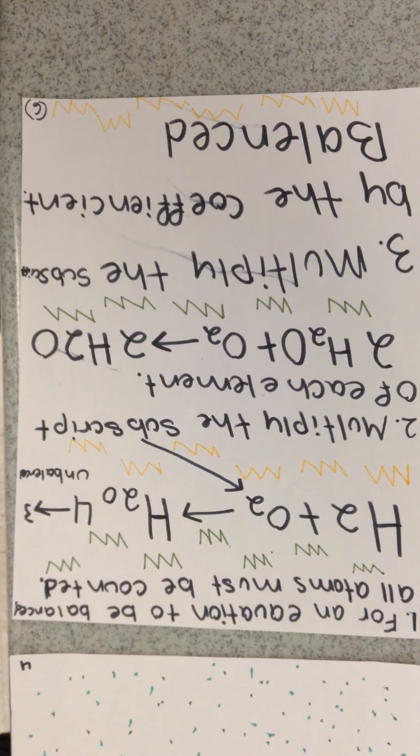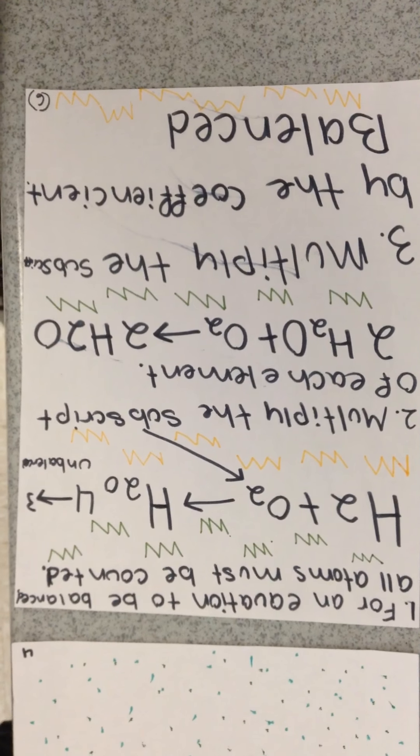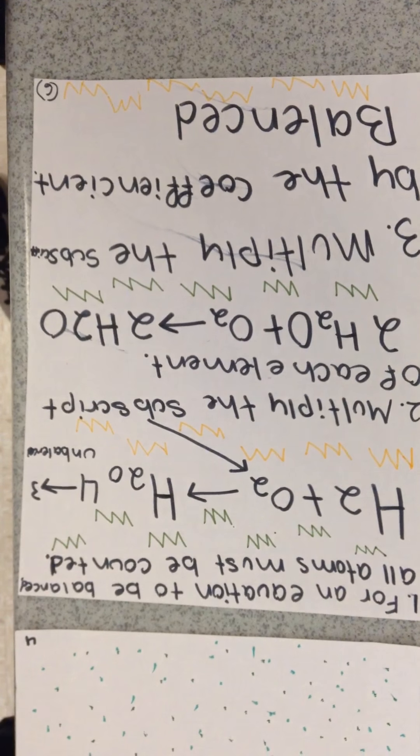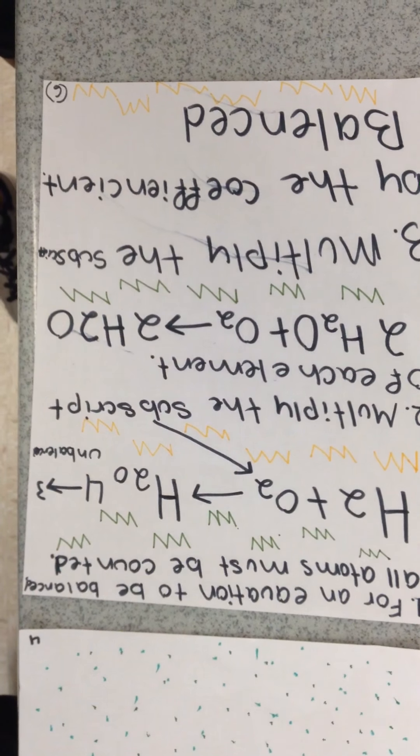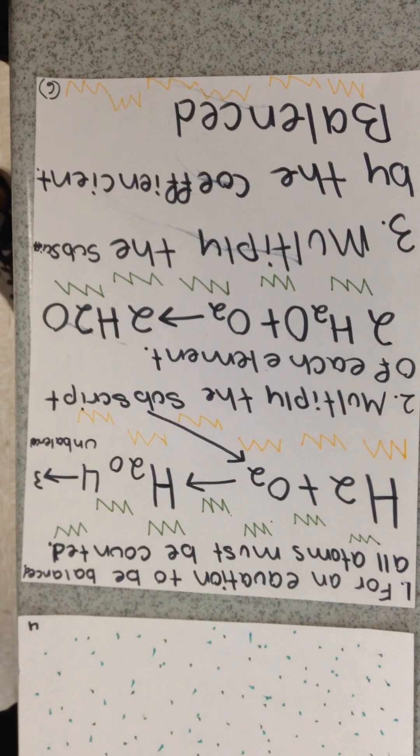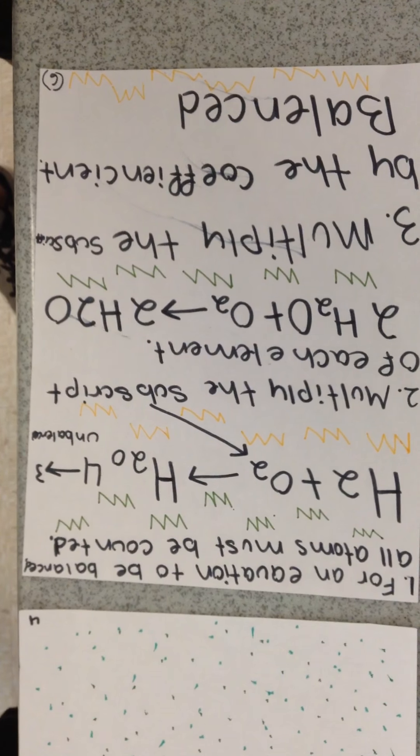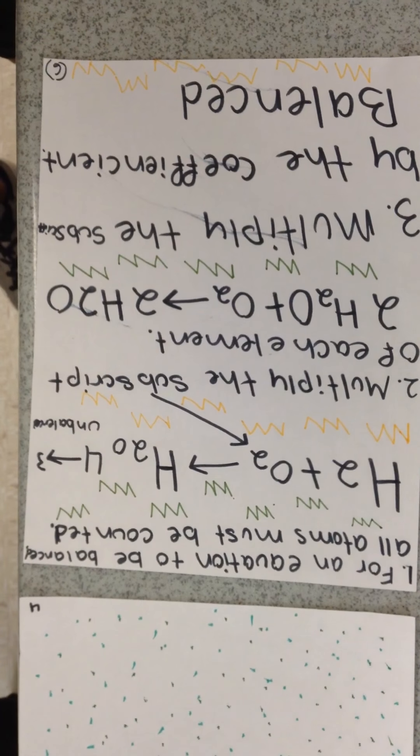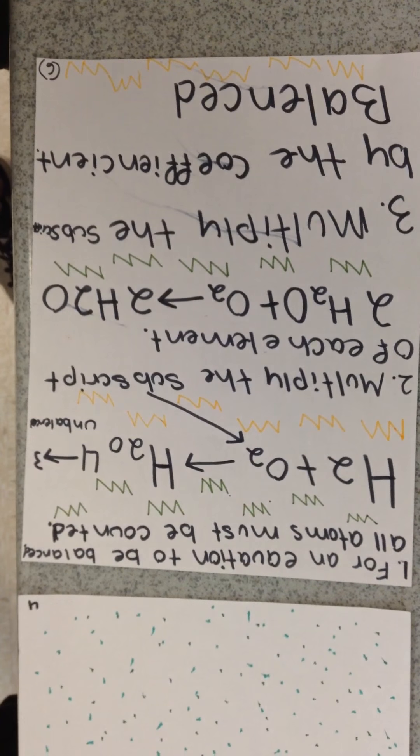H2 plus O2 equals H2O: 4, 3, unbalanced. Multiply the subscript of each element.